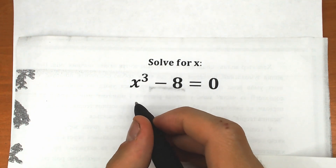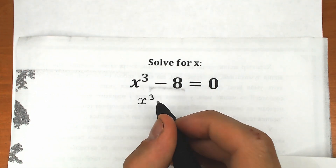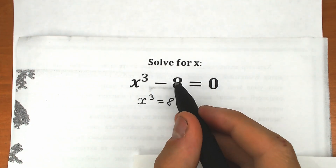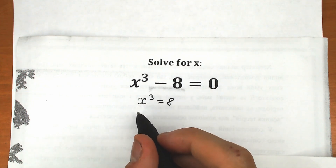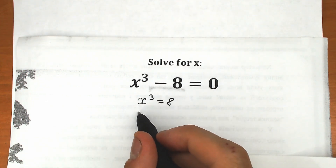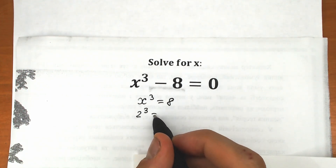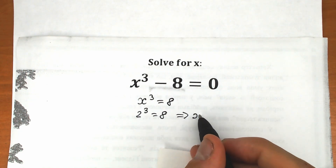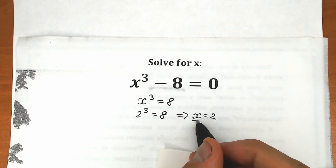We can easily write this equation as x cube equal to 8. We can bring this 8 to the right side, and we can write x cube as 2 cube, because 2 cube equals 8, and so x equals 2. We can easily solve this question like that.